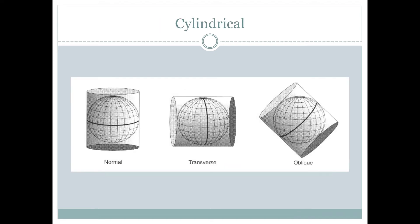If we want to project a map onto a cylinder, we really have three choices. One is to make the cylinder's axis parallel to the axis of the Earth, so the cylinder is oriented north-south just like the Earth. In this case, the cylinder would touch the globe along the equator — the dark line shown there. We call that a normal cylindrical map projection.